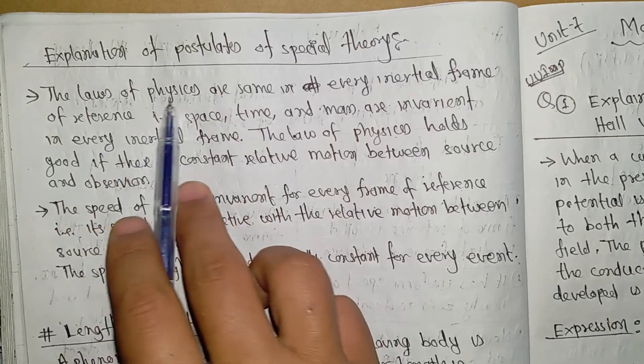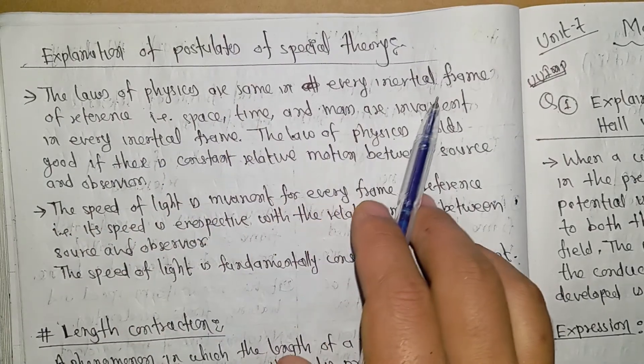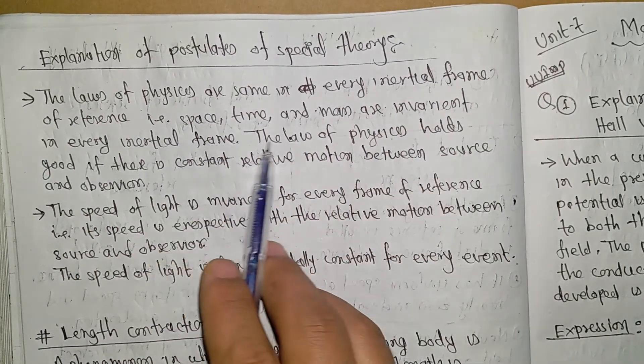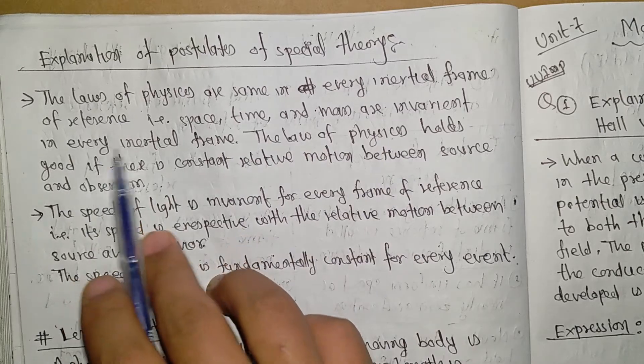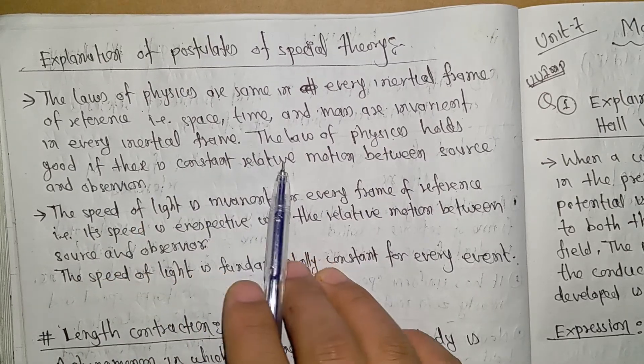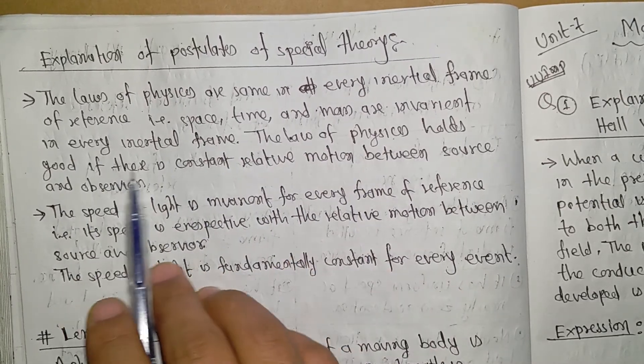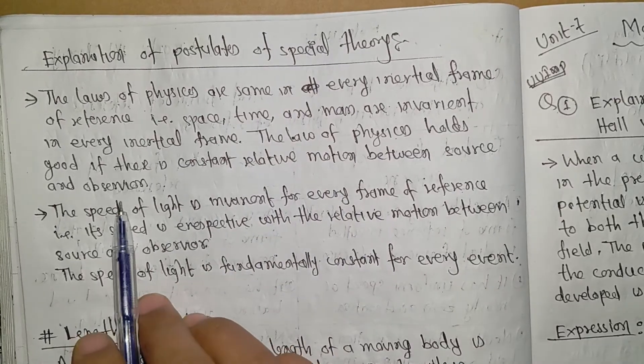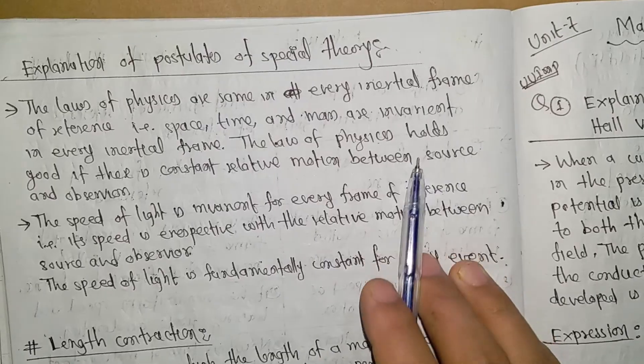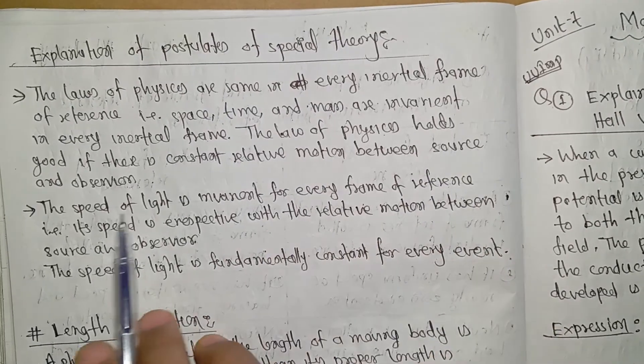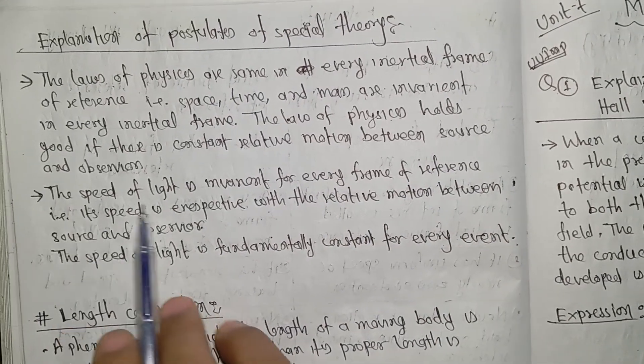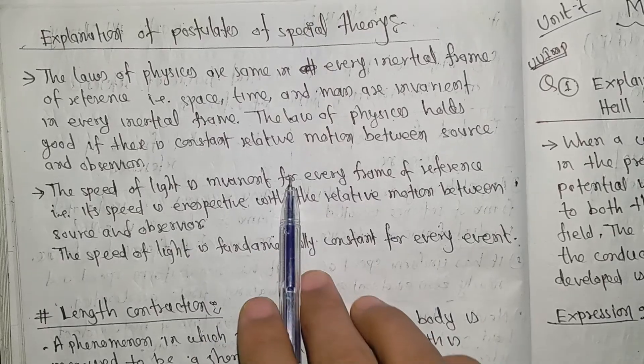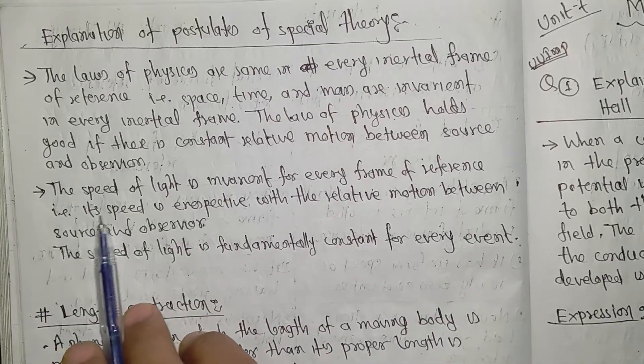Explanation of the first postulate: The laws of physics are same in all inertial frames of reference. That is, space, time, and mass are invariant in every inertial frame. The laws of physics hold good if there is a constant relative motion between source and observer.